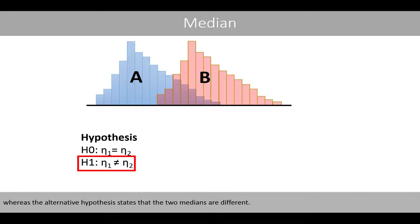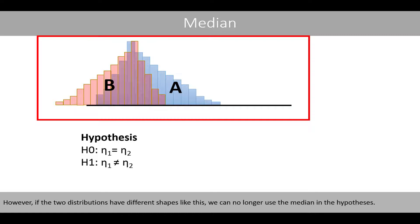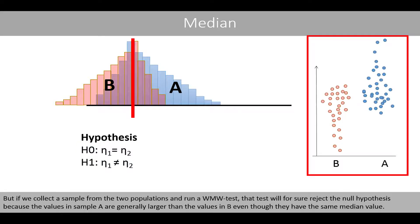The alternative hypothesis states that the two medians are different. Using the median in the null hypothesis is appropriate when the shape of the two distributions A and B are identical. However, if the two distributions have different shapes, we can no longer use the median in the hypothesis. Suppose these two populations have exactly the same median value — the null hypothesis is therefore true. But if we collect samples from the two populations and run a Wilcoxon-Mann-Whitney test, the test will reject the null hypothesis because the values in sample A are generally larger than in B, even though they have the same median.